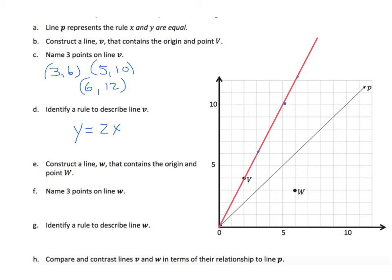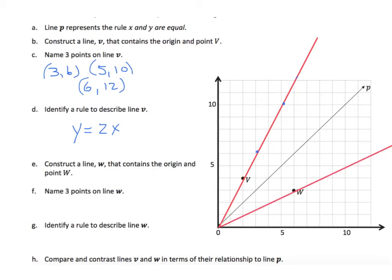Let's now construct another line. It says construct line W that contains the origin and the point W. Okay, let's put in that line. Now, let's name some points on line W. If I have a 10, I have 5. If I have a 4, I have a 2 for Y. And if I have 12, my Y is 6.